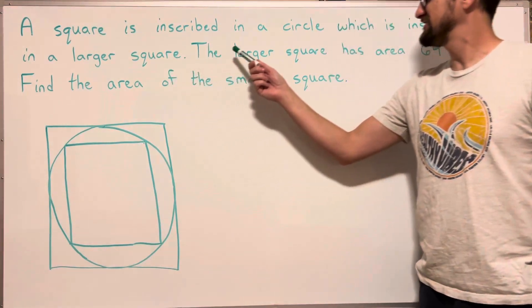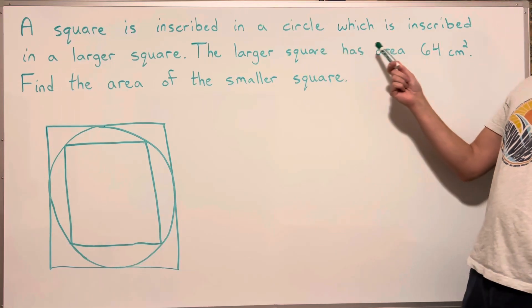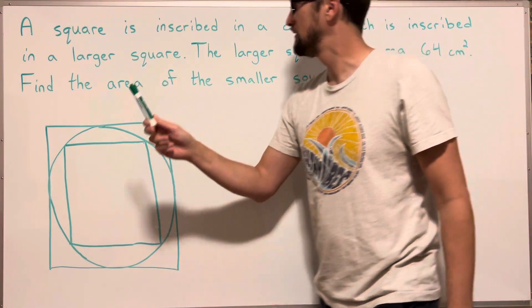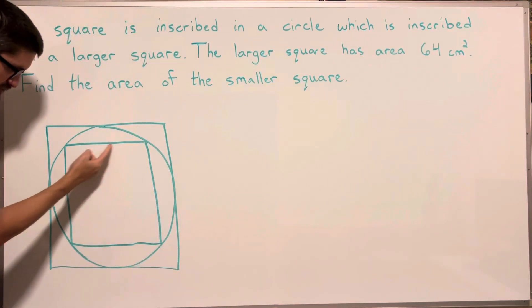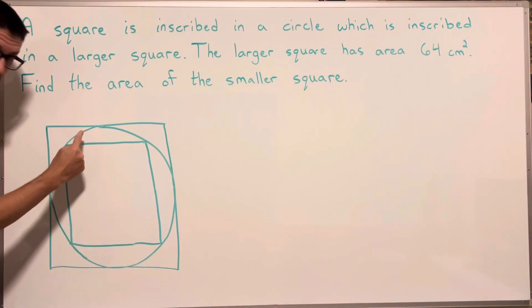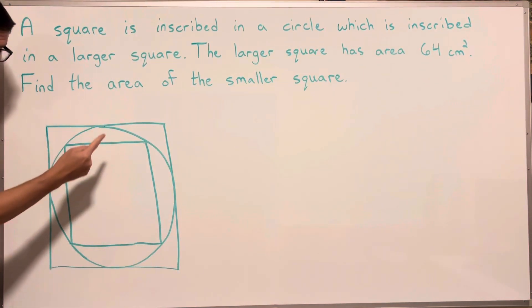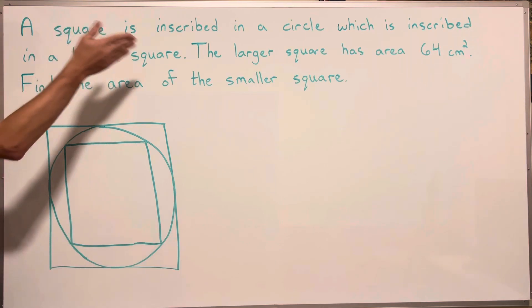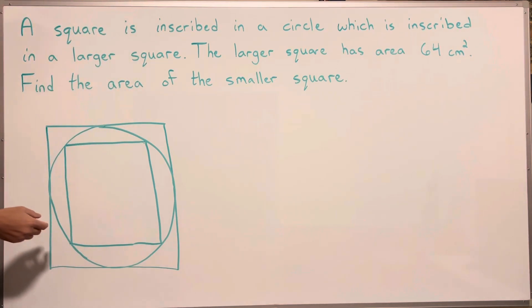A square is inscribed in a circle which is inscribed in a larger square. The larger square has an area of 64 square centimeters. Find the area of the smaller square.